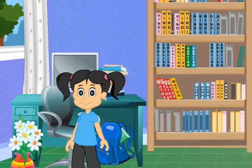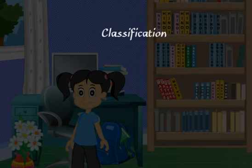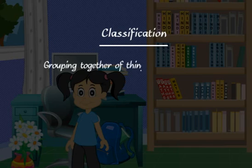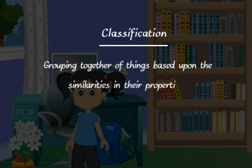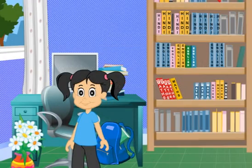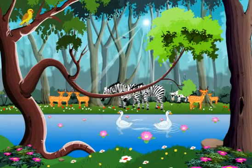Sorting books in this manner will help her to find the book of a particular subject easily whenever she needs. So, she is using the concept of classification. Classification simply means the grouping together of things based upon the similarities in their properties. Classification plays an essential role in the process of searching.